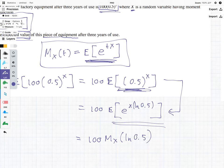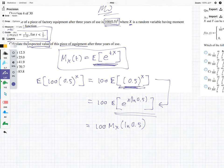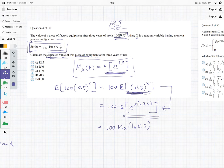and we just now use this formula that they've given us over here to get the follow-up. We have 100 times 1 divided by 1 minus 2, and in this case, our t is ln 0.5, and if we put that into the calculator, we can get 41.9.